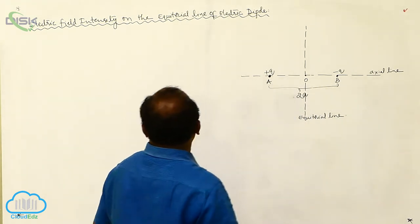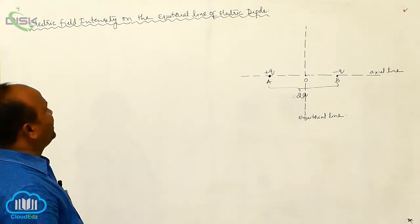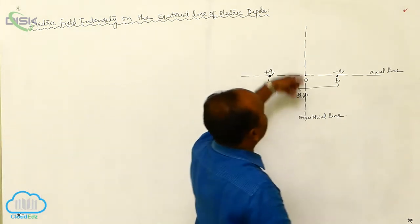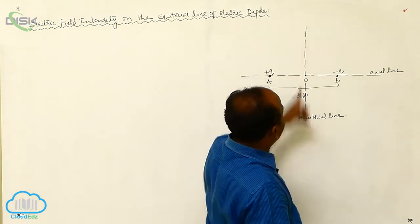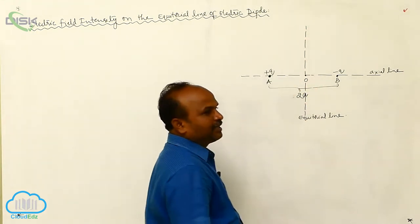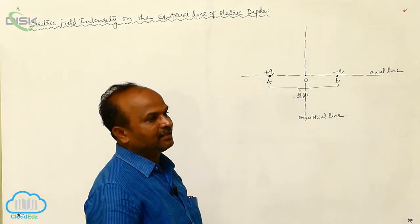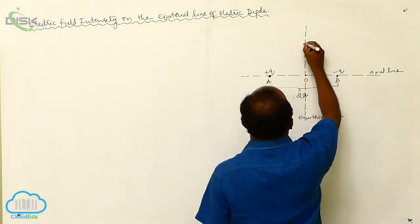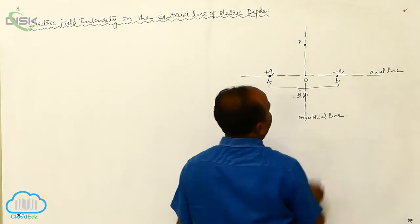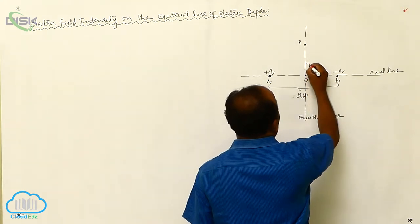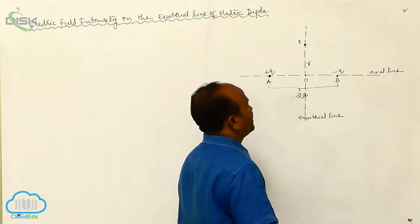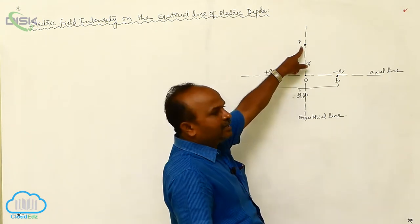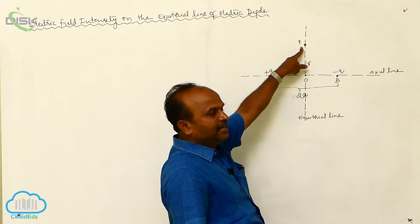The heading is: Electric Field Intensity on the Equatorial Line of the Electric Dipole. Let us consider a point P which is at a distance R from the center of the dipole. We want to calculate the resultant electric field intensity at this point.